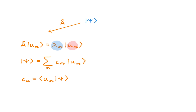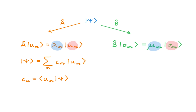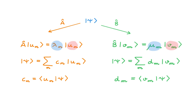But in general, there is nothing special about operator A. We can define a second Hermitian operator, B, that corresponds to some other physical property. We can also write the eigenvalue equation of operator B, where the eigenvalues are mu_m and the eigenstates are v_m. The v_m eigenstates also form a basis of state space, so we can expand the same state psi in this new basis. The expansion coefficients D are the brackets between v_m and psi, giving the representation of psi in the v basis of eigenstates of B.